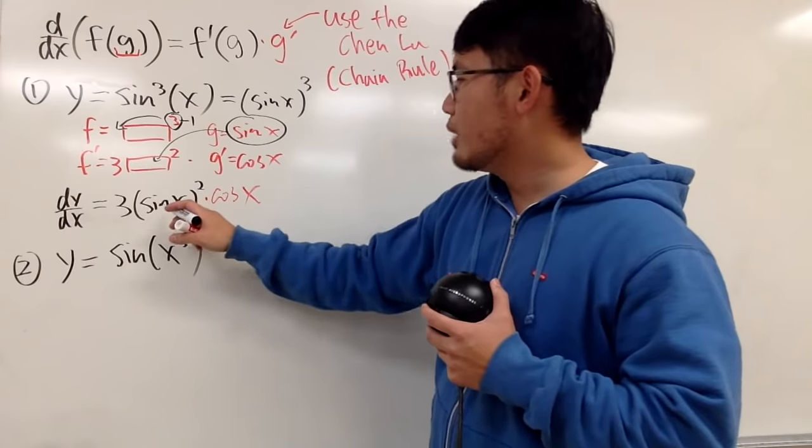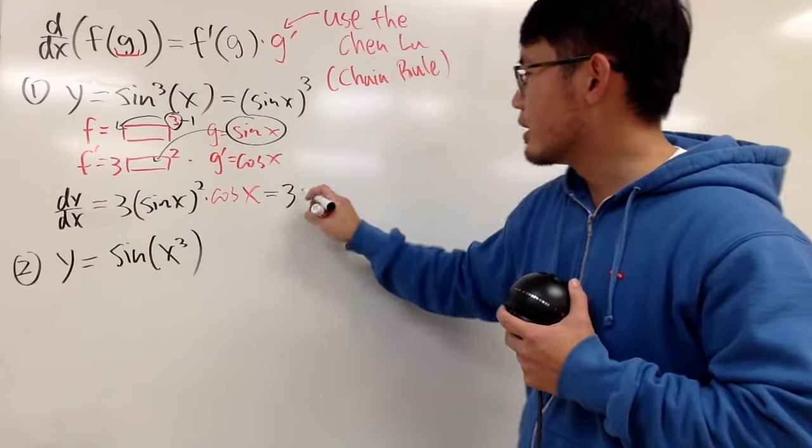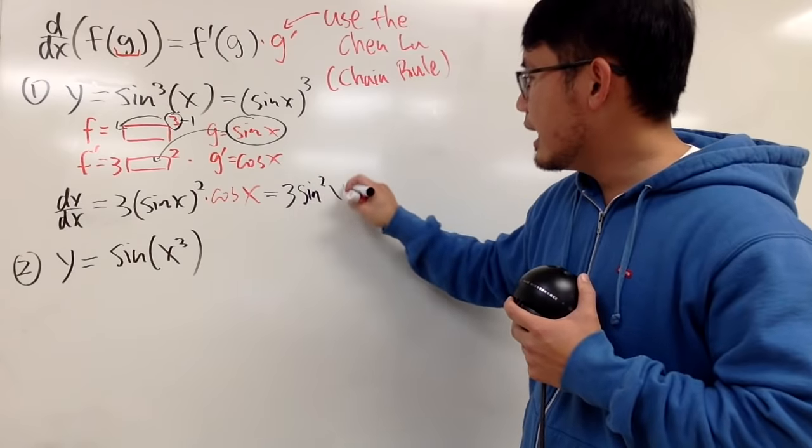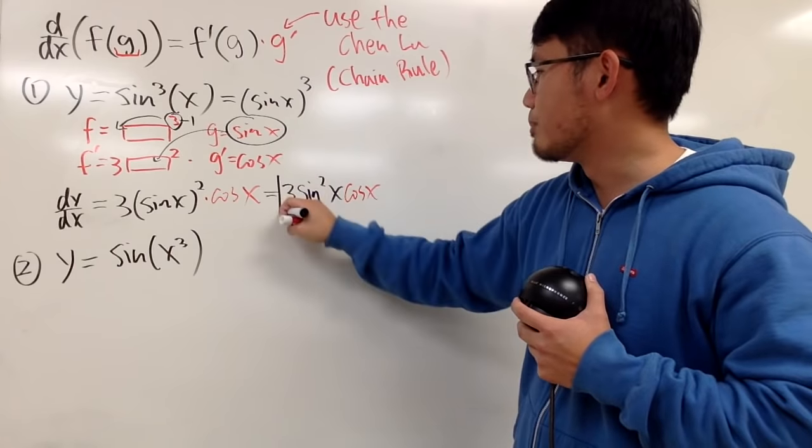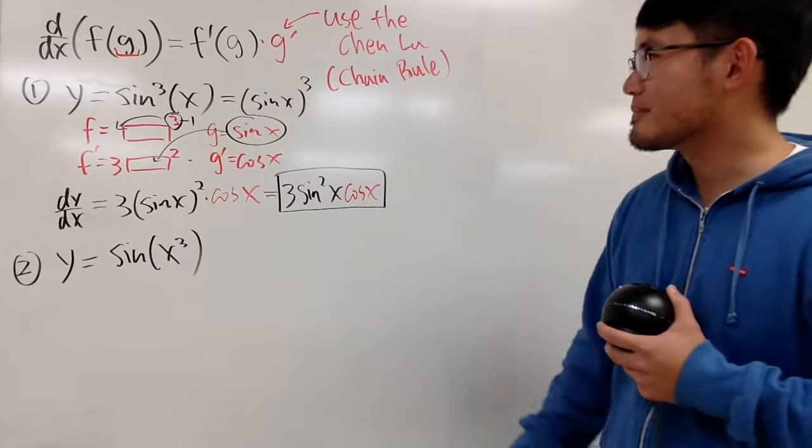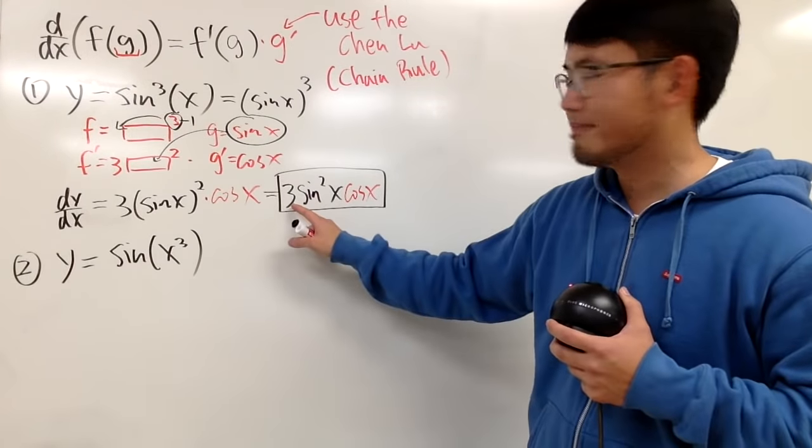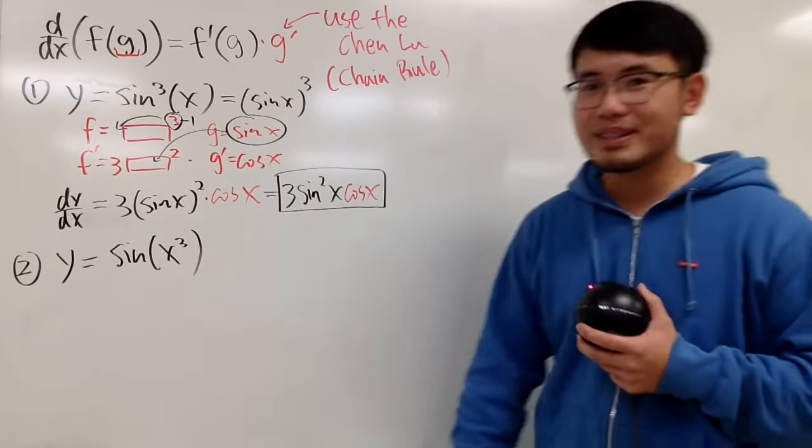And usually when you have this to the second power, people like to just write this as three, and then you put the two right here. So it's sine squared x, and then we have the cos x on the outside. So I'll box this right here for the answer. All right? That's nice. Bring the three to the front. Minus one. And then multiply by the derivative of sin. That's it, okay?